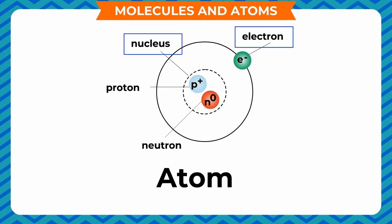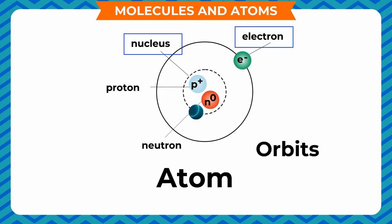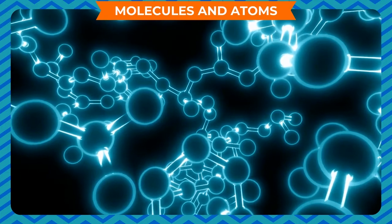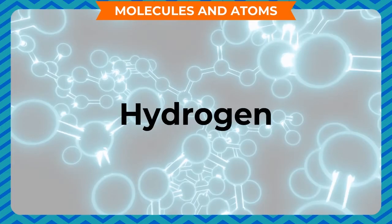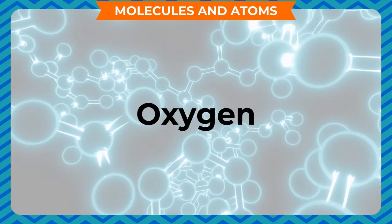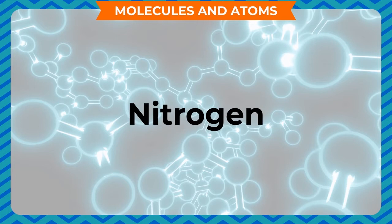Protons and neutrons exist at the center of the atom, known as the nucleus. Electrons revolve around the nucleus in fixed circular paths called orbits. Some substances like iron, aluminum, hydrogen, oxygen, nitrogen, or carbon consist of only one type of atom.